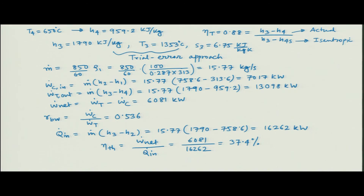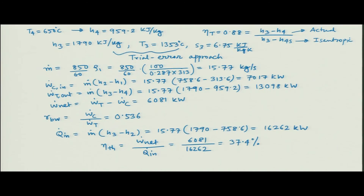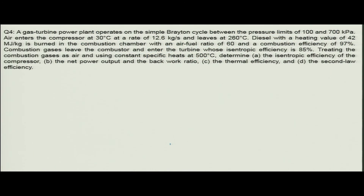In this problem we considered an actual Brayton cycle with given turbine and compressor isentropic efficiencies, from which we obtained the net power output, back work ratio, and thermal efficiency. Now we will move to the next problem.